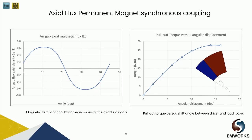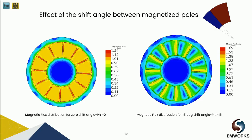These are field plots at zero shift angle, meaning both rotors are aligned with zero angle between them — showing maximum field around 1.2 Tesla. When the angle shift is 15 degrees, we see field values around 1.5 Tesla in some regions, which explains why the highest torque occurs at this position: there is maximum interaction between both rotors.